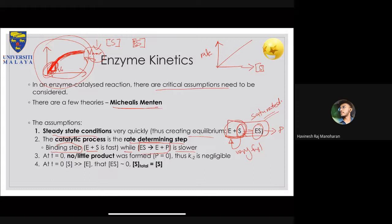This is an assumption — for all we know, some enzymes have very quick product formation while achieving the induced-fit form is the slow step. But in Michaelis-Menten, the assumption is the first step (binding) is very fast and the second step (product formation) is slower. The third assumption is at t = 0, at the very beginning when you just mix substrate and enzyme, there is no or little product formed — so P ≈ 0.